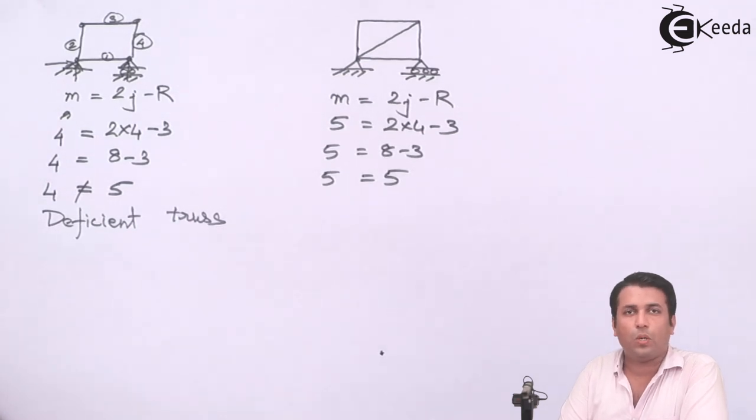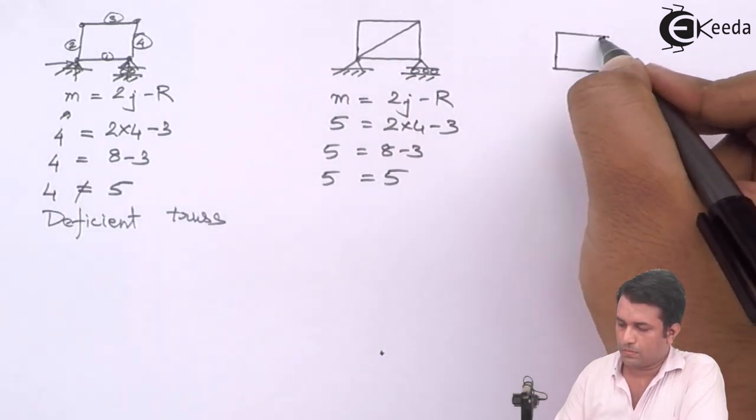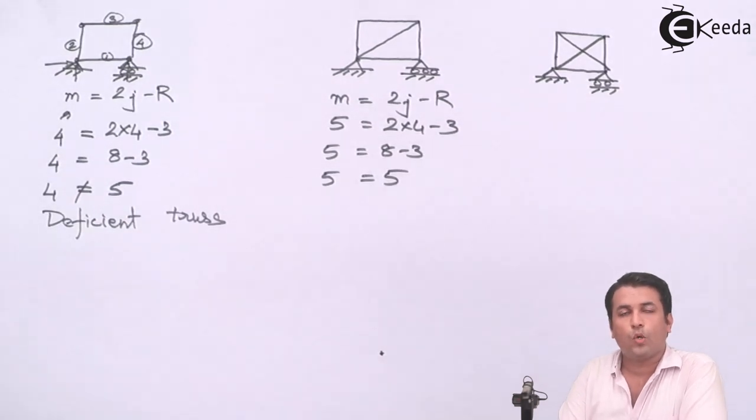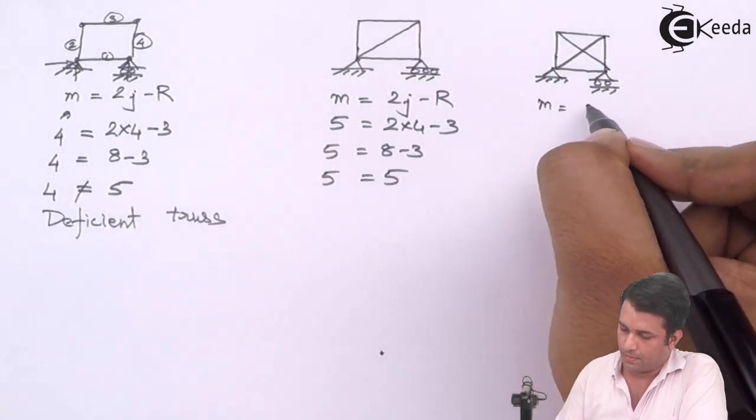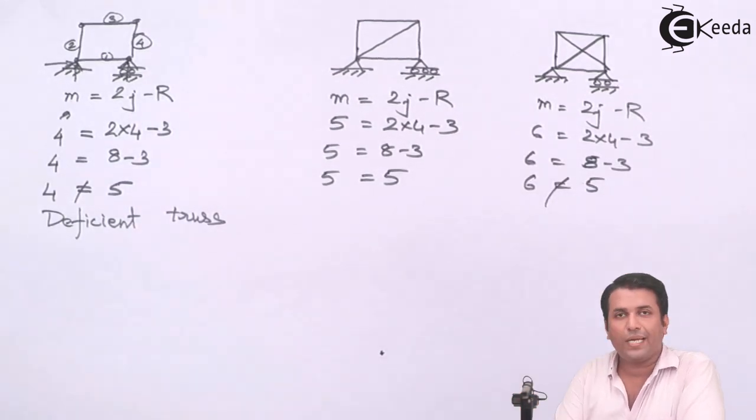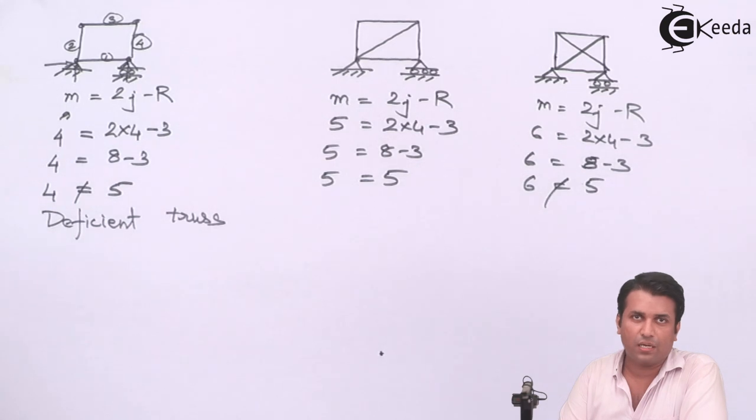Suppose, in this case again, if I happen to add one more member, what happens in that case? You can see that I have the square truss with two extra members in between. So the number of members is 6, number of joints is still the same, that is 4, and number of reactions is again the same, that is 3. You can see that my left hand side and right hand side both are not same. My left hand side is a higher number compared to the right hand side. That means I have one extra member in this truss, and that type of truss is known as Redundant Truss.